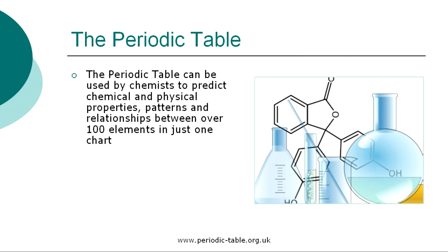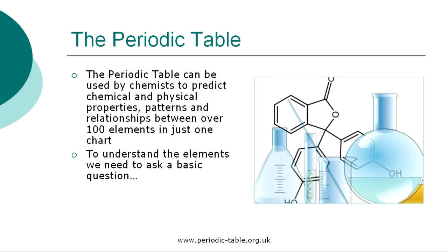The Periodic Table can be used by chemists to predict chemical and physical properties, characteristics, patterns, and relationships between over 100 elements in just one chart. The Periodic Table is an arrangement of chemical elements in order of atomic number, usually in rows, so that elements with similar atomic structure, and hence similar chemical properties, appear in vertical columns. To understand the Periodic Table, we need to be familiar with the elements, and to understand the elements, we first need to ask a basic question: what is matter?